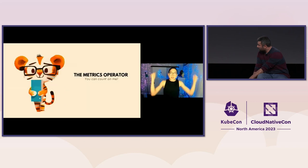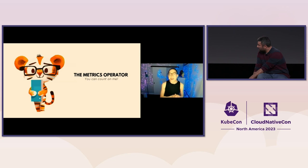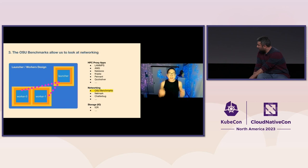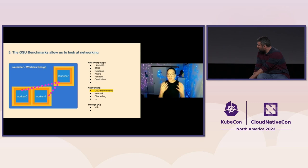With the metrics operator, you create something called a metric set. The metric set allows us to look at networking — which we thought was the culprit — specifically using something called the OSU benchmarks.